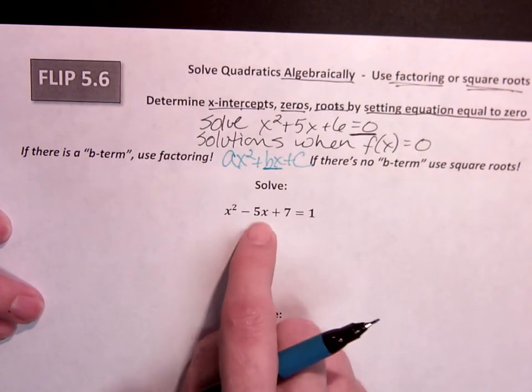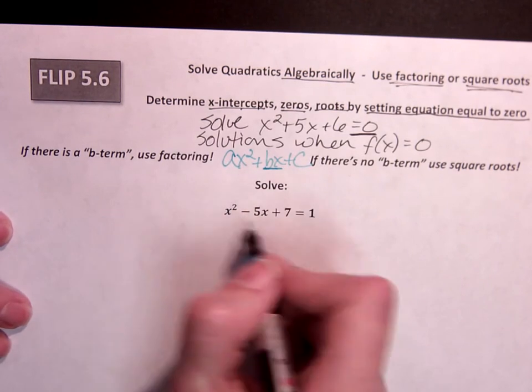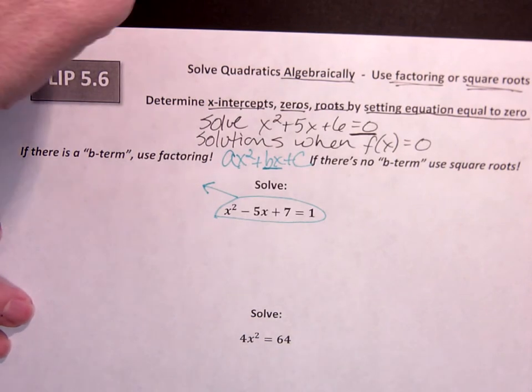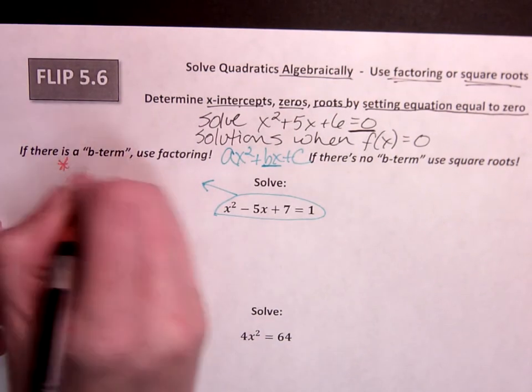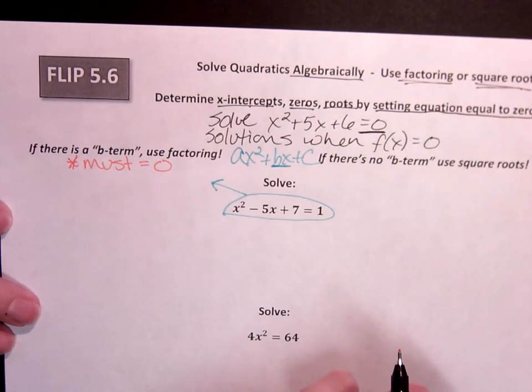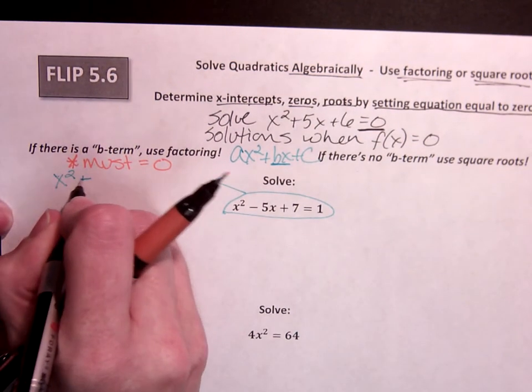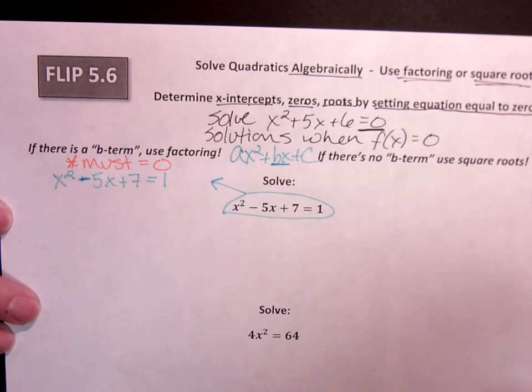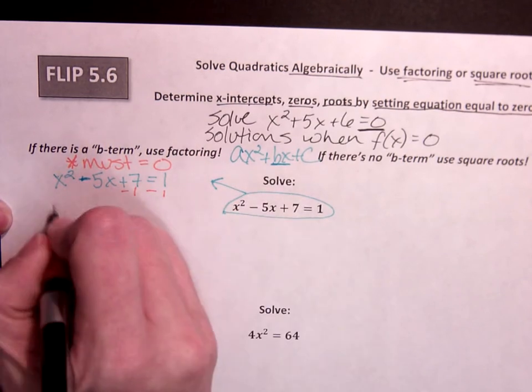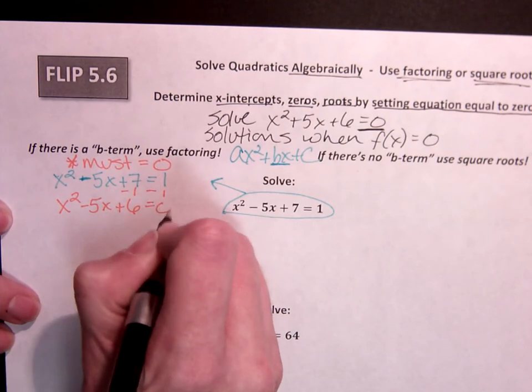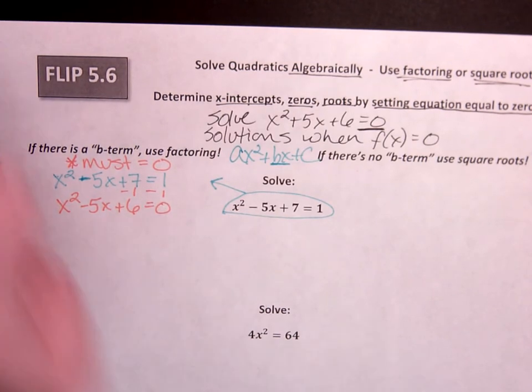When I see this, I can label a, b, c. So I'm going to use factoring to solve. The first thing we need to keep in mind is that it must equal zero in order to use factoring to solve. So I'm going to take my equation, x squared minus 5x plus 7 equals 1, and I'm going to make that be 0 by subtracting 1. x squared minus 5x plus 6 equals 0. And now we're ready to factor.